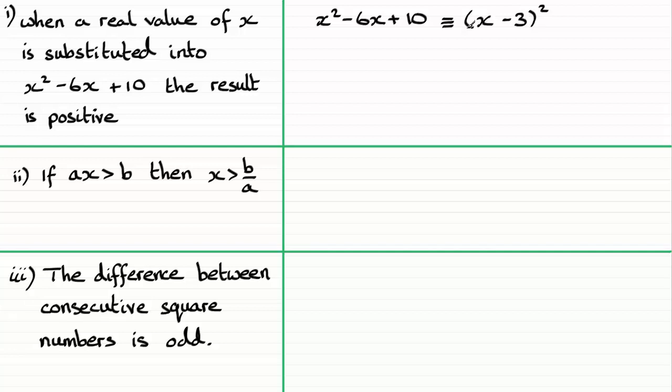And if you were to square this bracket out you would get x squared, the first term here, would get two lots of minus 3x which would be minus 6x, but you'll end up with minus 3 squared which is 9, and we've got to bring it up to 10 so we just need to add one in.